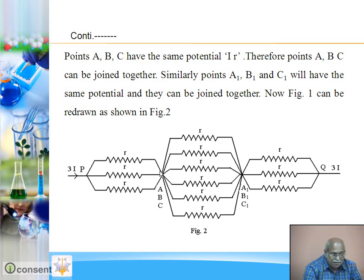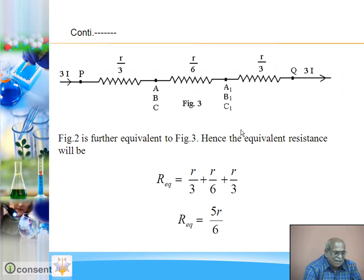So all these 6 resistances, each equal to R, appears between A, B, C together and A1, B1, C1 together. Yes, you are right. Then these 6 resistances are in parallel. So what is the net situation that is shown in figure 3? Resistance from P to A, B, C is R, R, R in parallel, so R upon 3. Finally, resistance from A, B, C to A1, B1, C1, R are 6 times in parallel, so equivalent R upon 6.